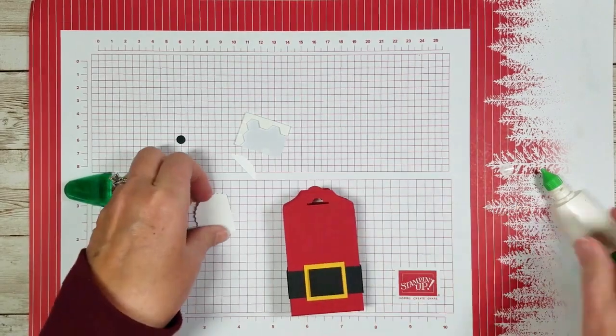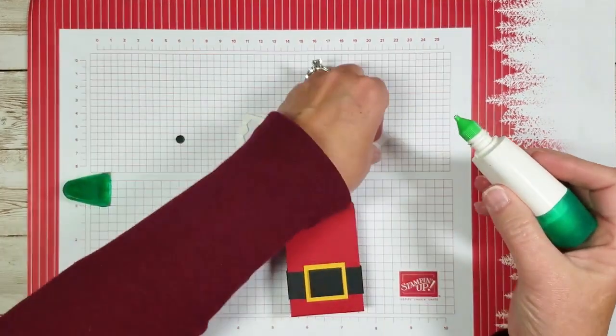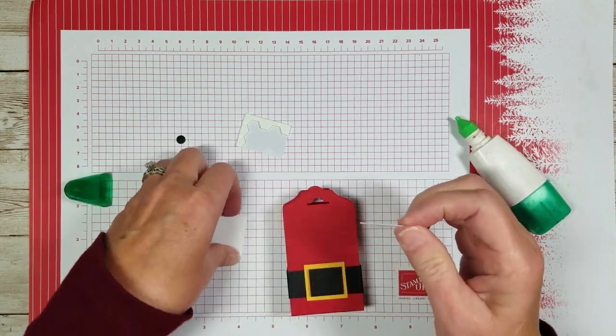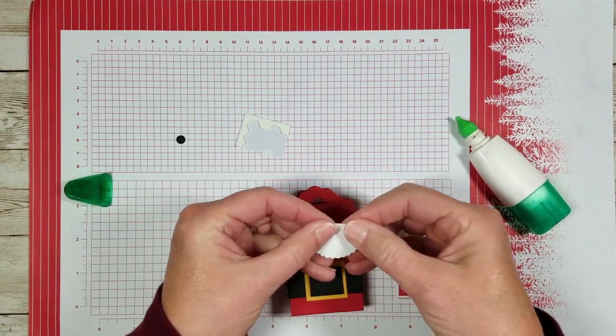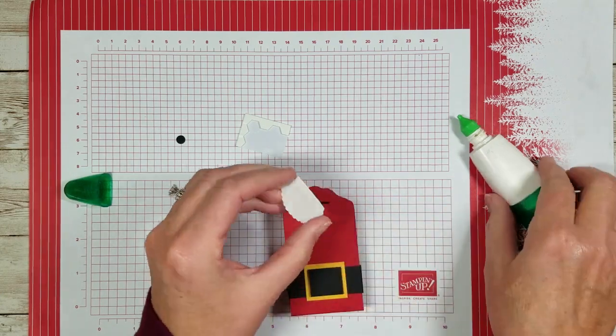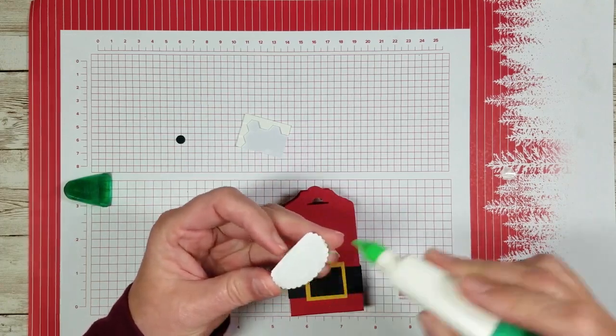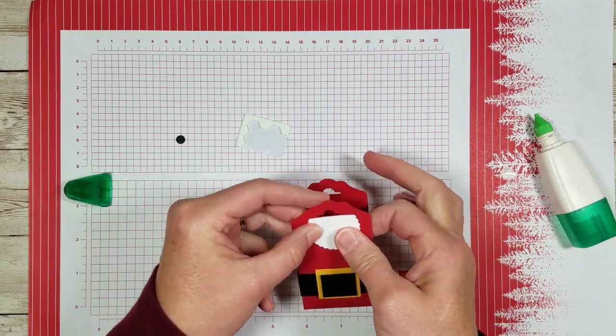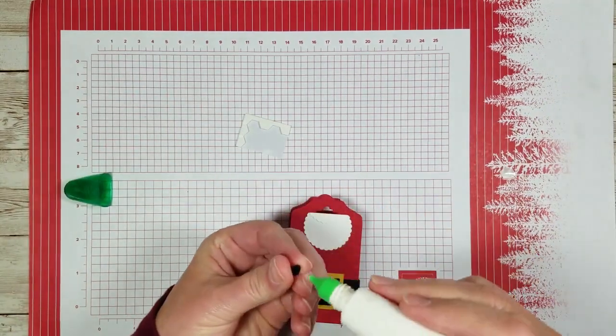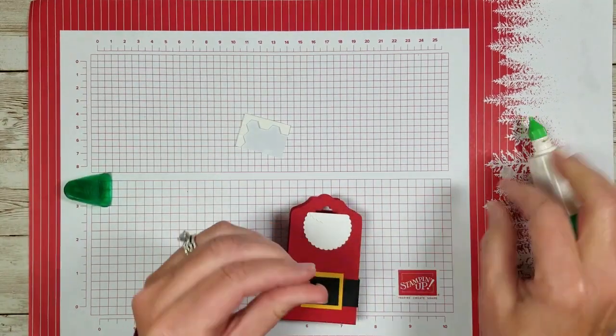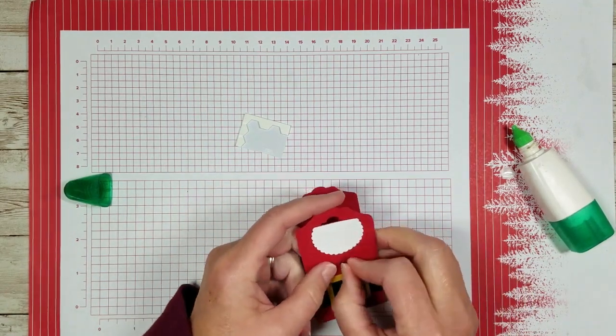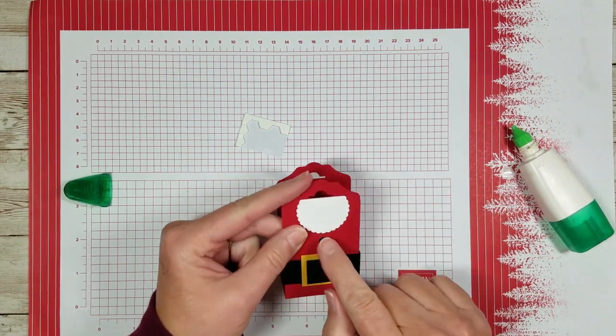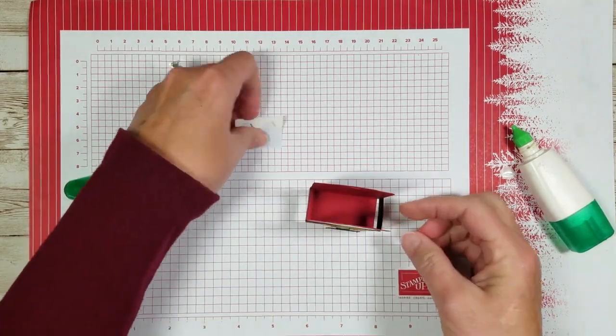We're going to glue this little bitty piece of white to that part. It just makes it kind of look like a beard. You could add a little dot in there for a mouth if you wanted to. It's going to go below this. And just because I think he needs a little button in his suit, put it up here. Now if you get your belt up too high, you can always kind of tuck your button up under his beard too.